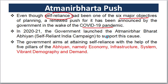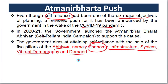We launched the Self-Reliant India campaign in 2021. This has five pillars: economy, infrastructure, system, vibrant democracy, and demand. The self-reliant India campaign addresses all five pillars together. We have to develop the economy, infrastructure, and system, as well as demand, as part of this Atmanirbhar Bharat vision.